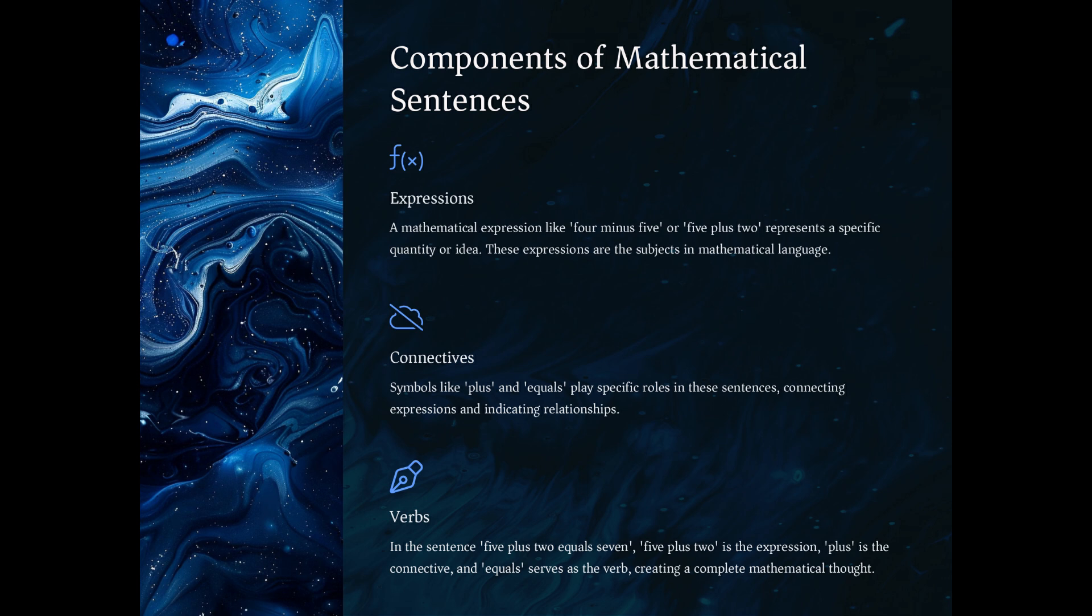In the sentence 5 plus 2 equals 7, 5 plus 2 is the expression, plus is the connective, and equals serves as the verb, creating a complete mathematical thought.